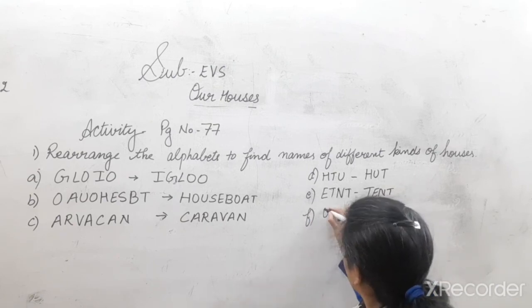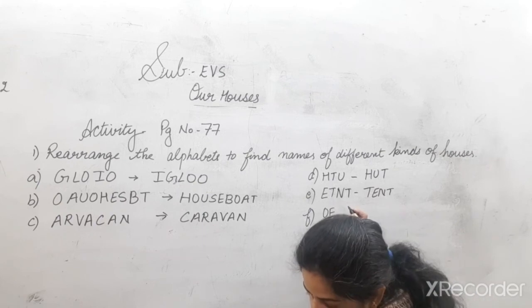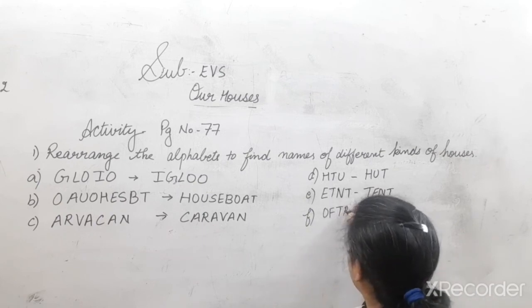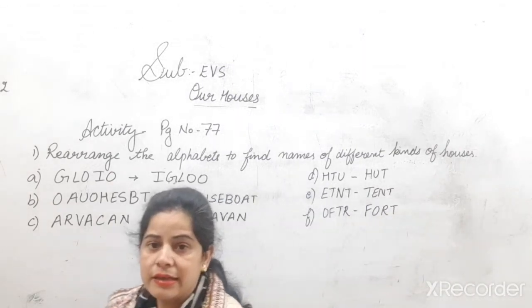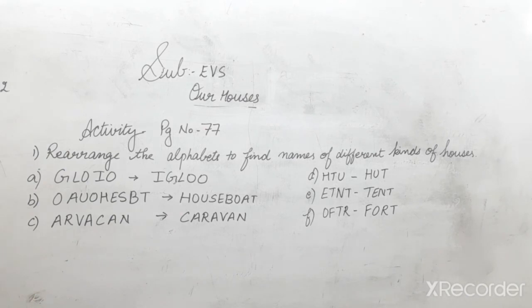F, O, F, T, R. Very simple. F, O, R, T. Fort. So these are the five points in your activity.